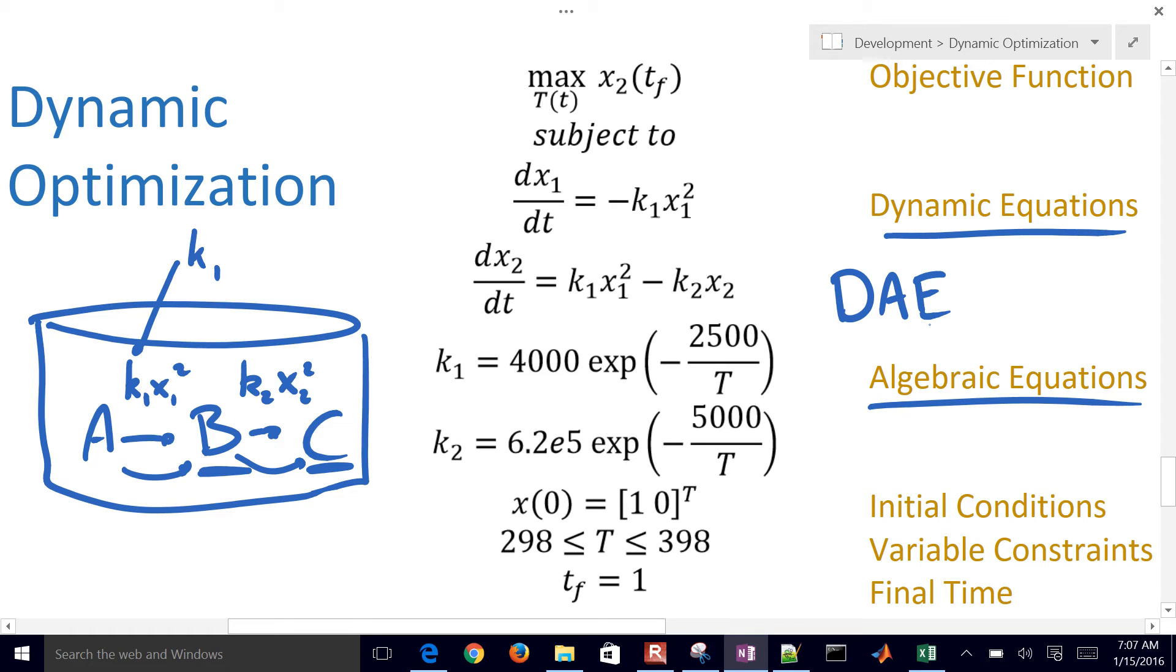Now, we're not just going to solve this system, but we're going to allow the optimizer to adjust temperature of this reactor over time between 298 and 398. So these are the variable constraints.